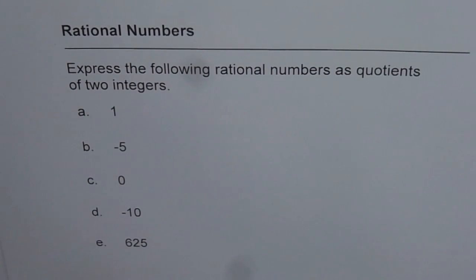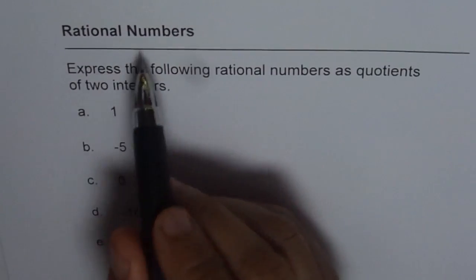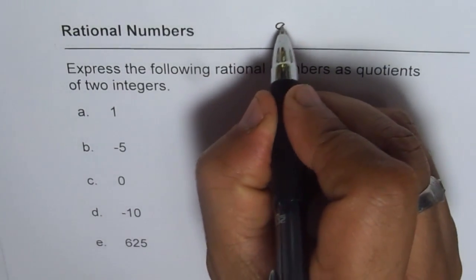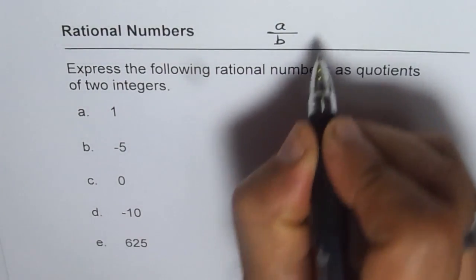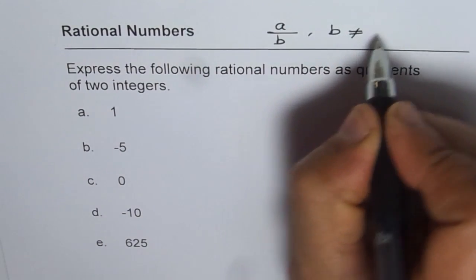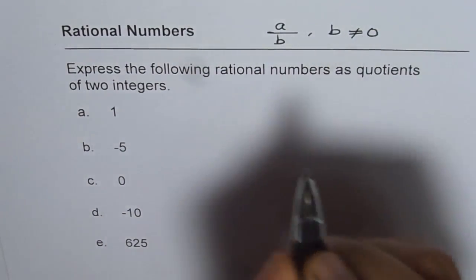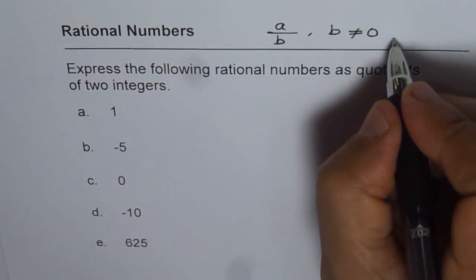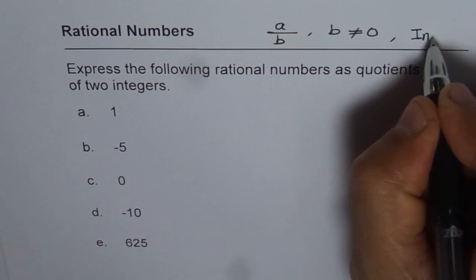Express the following rational numbers as quotients of two integers. I am Anil Kumar, and as you know, rational numbers can be written in the form of A over B, where B is not equal to 0 and A and B are integers.